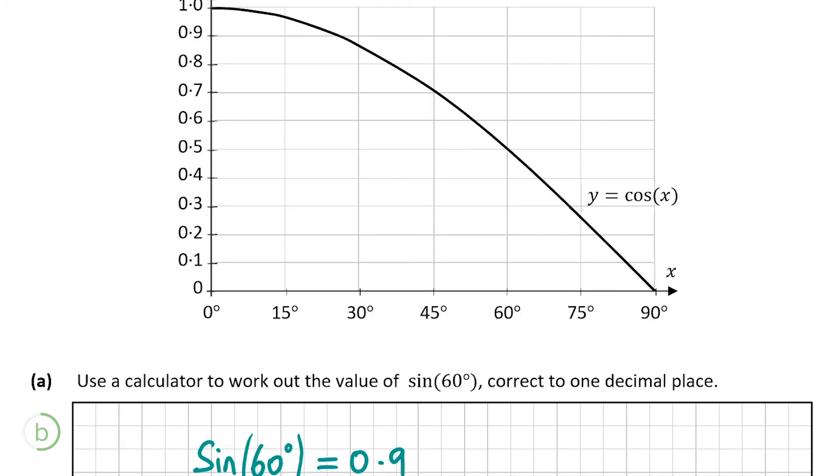We're told that sin(0°) is 0 so we can mark that point, sin(60°) is 0.9 as we worked out in part a, and sin(90°) is 1. Now we can connect these three points and draw in the graph. That pink line there is the graph y equals sin(x). Now that's part b, let's have a look at part c of the question.